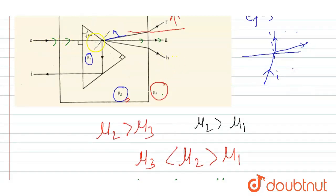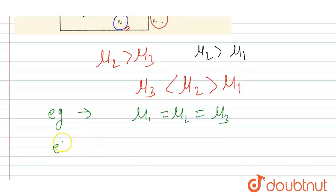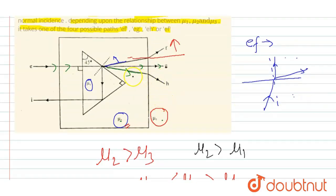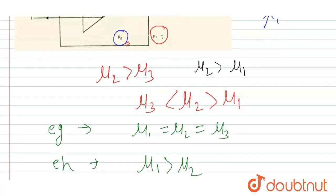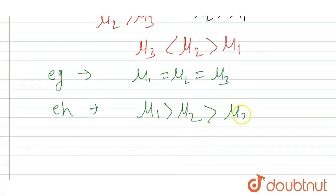Now coming to path EH. After refraction at the first interface, the light tends to bend away from the normal, so μ1 > μ2 — μ2 is the rarer medium with respect to μ1. Drawing a normal at the second interface, the refracted light again bends away from the normal, so μ2 > μ3. Hence for path EH: μ1 > μ2 > μ3.